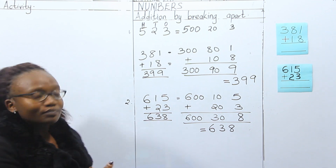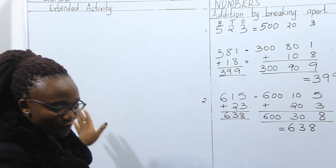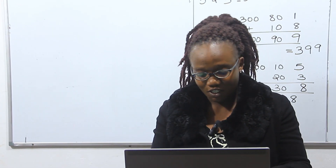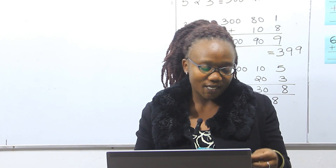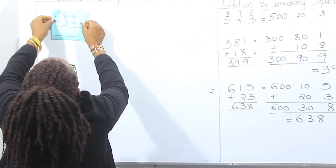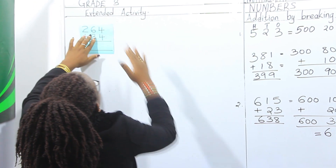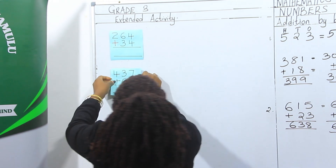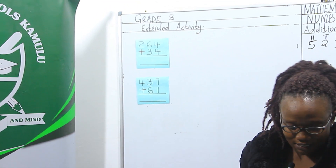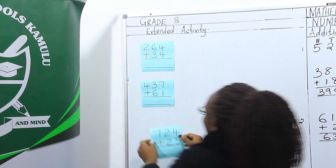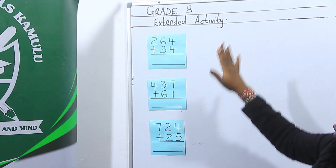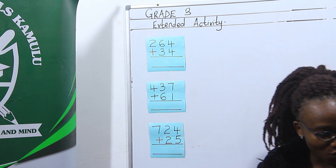I hope everyone has understood. I'm going to give you some sums to do on your own for more practice. I'm going to pick more cards for your extended activities — extended activity number one, extended activity number two, and extended activity number five. I hope you are going to enjoy doing this activity at home.